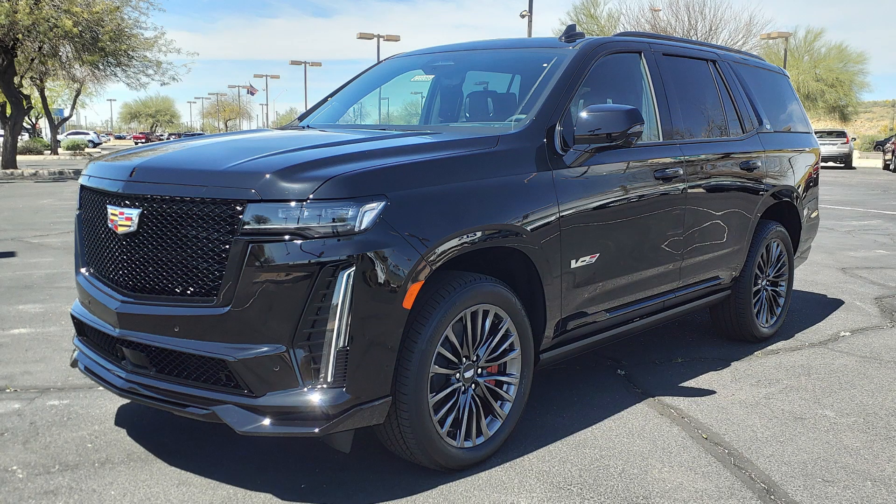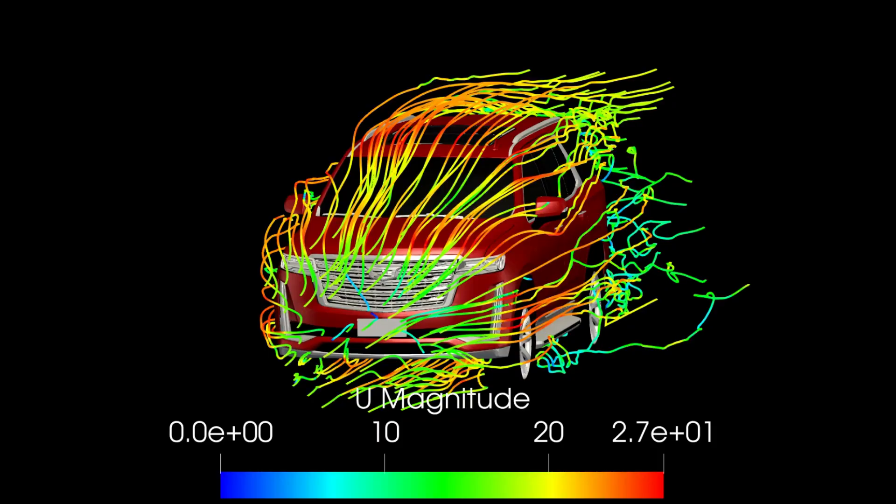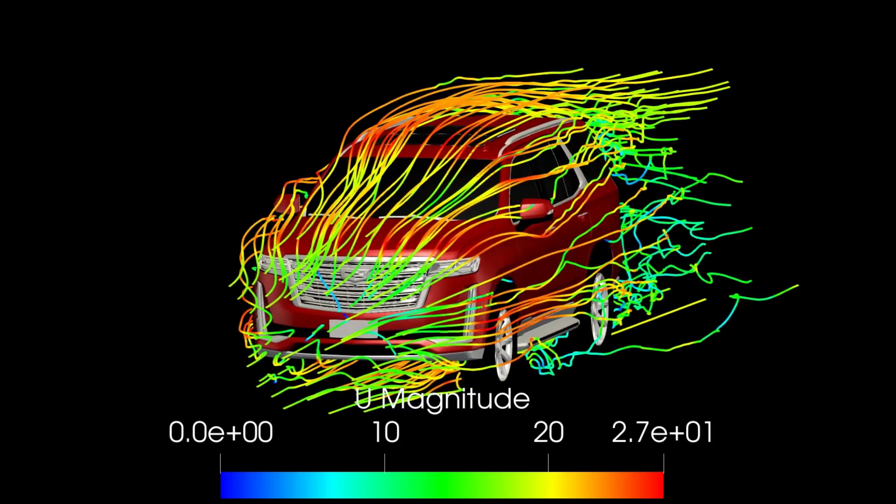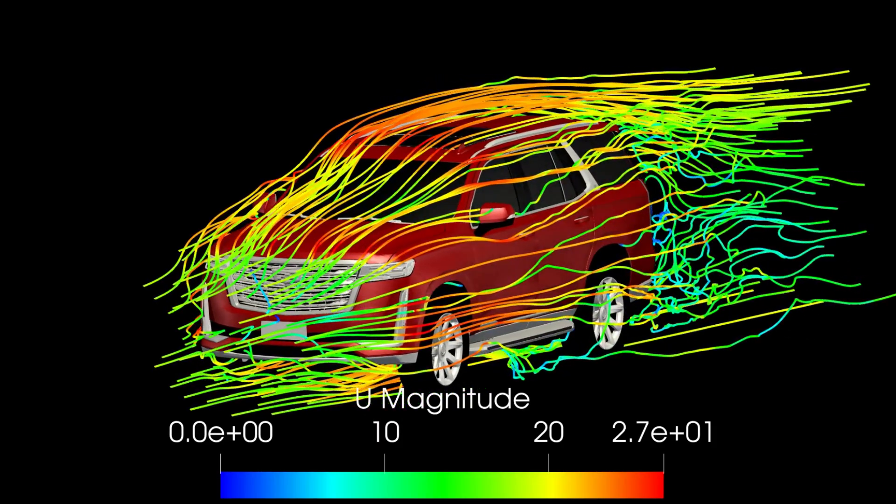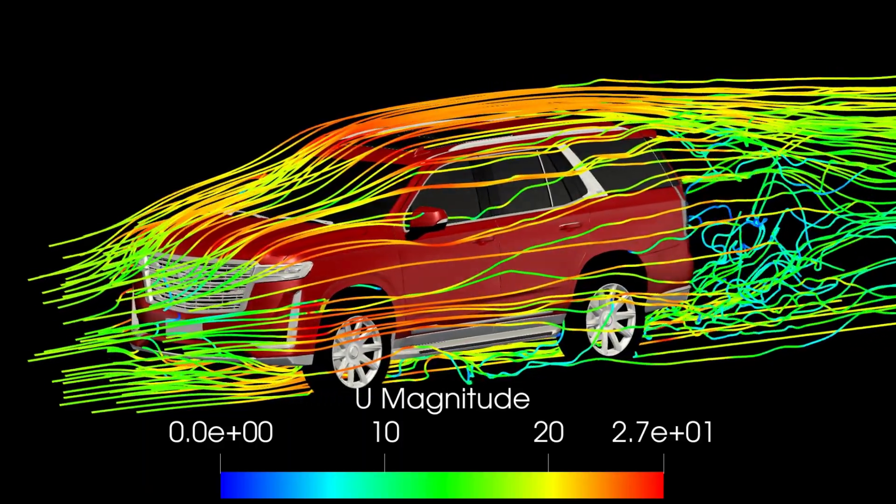The Cadillac Escalade is essentially a brick on wheels, but somehow it's way more aerodynamic than that. A regular brick has a drag coefficient of around 1, we actually simulated it here.